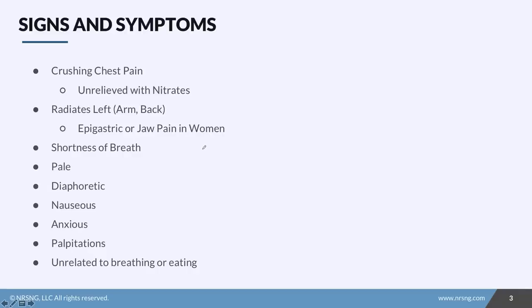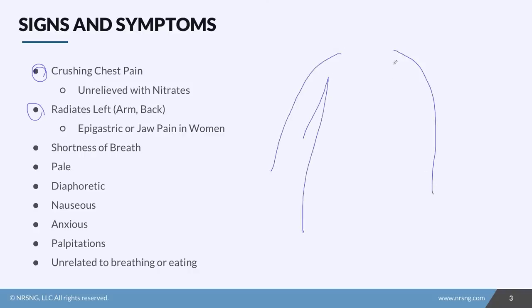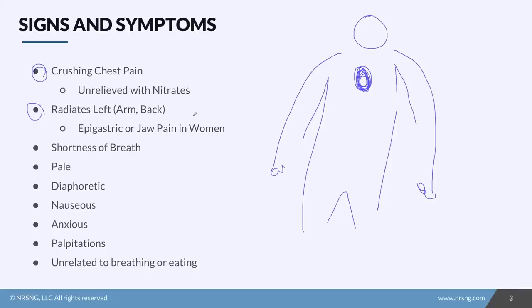How are our patients going to present? The classic sign is crushing chest pain and radiating arm pain. Usually right in the middle of the chest, they're going to have this crushing chest pain. They may even say they feel like an elephant is sitting on their chest, or like a vice grip is on their chest, or just a heavy weight. If the chest pain is relieved by nitrates, we call it angina. But if this is an MI, the nitrates will be completely ineffective.